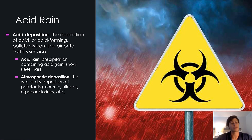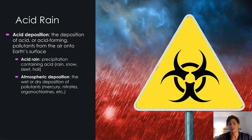Let's go over some definitions. Acid deposition is essentially defined as a deposition of acid or acid-forming pollutants — pollutants such as sulfur dioxide and nitrous oxides — from the air onto Earth's surface.